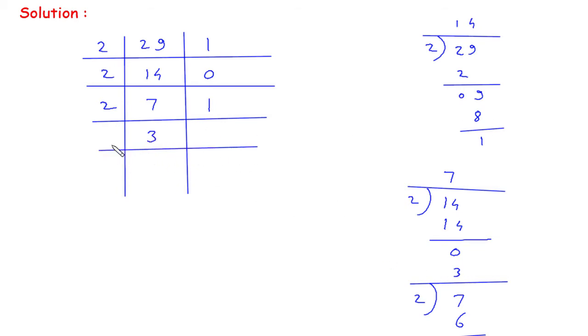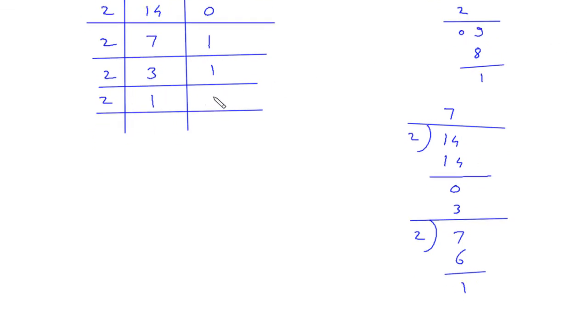Now again we will divide this 3 by 2. So the remainder will be 1 and here it will be 1. Again if we divide this by 2, then here this will be 1.